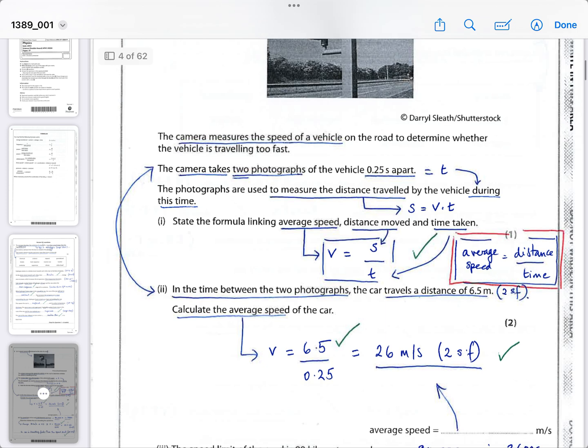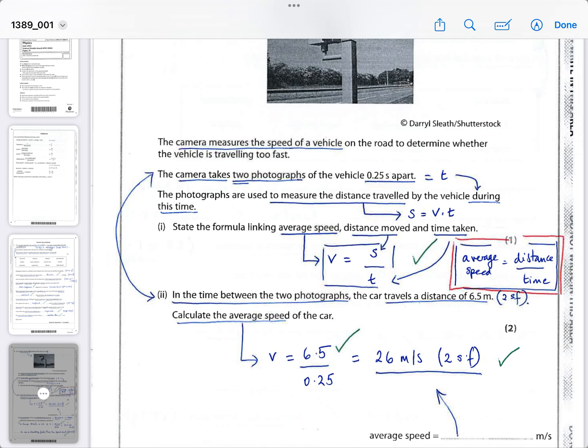It then says in the time between the two photographs the car travels a distance of 6.5 meters. So somehow, obviously the camera can work out through its programming, computer programming, some kind of information that's in the database that it traveled a distance of 6.5 meters from the two photographs. They want you to calculate the speed using the equation that you just quoted. So you know the time was 0.25 seconds, you put the numbers in and you get two significant figures—26 meters per second. That's the average speed. You can see the ticks are where you'll get the marks. You only need to quote two significant figures because the data provided is only accurate to two significant figures, and that's how you can work out how many significant figures you should quote.